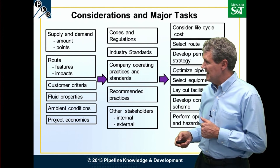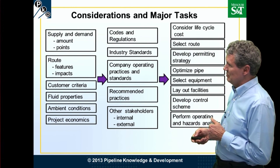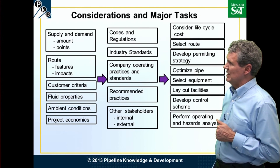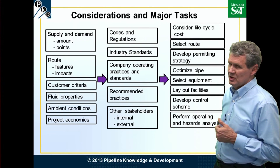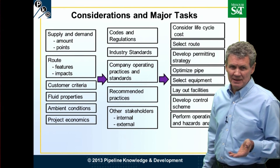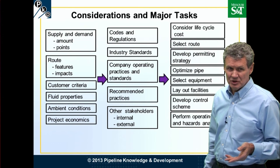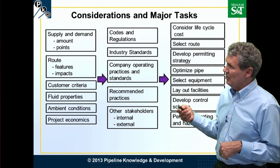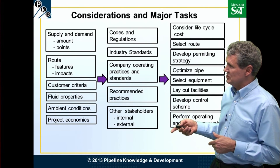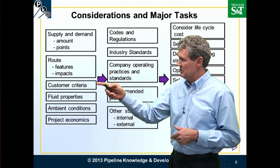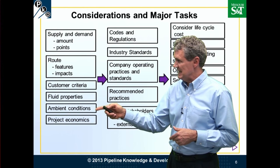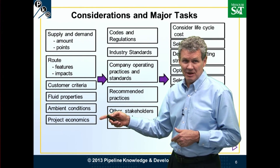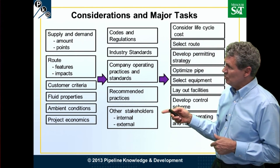Whenever we're looking at a design and engineering project, let's start on the left-hand side and work our way over to the right-hand side. We start out with the supply and demand points — where is this pipeline going to start, where is it going to stop? We design the route, look at the features, the impacts, the customer criteria, the fluid properties, the ambient conditions, and project economics.